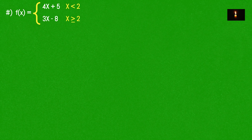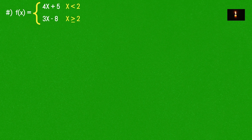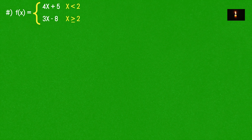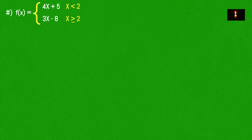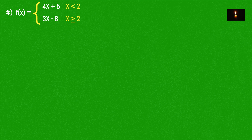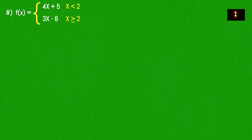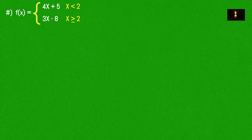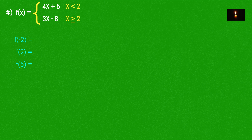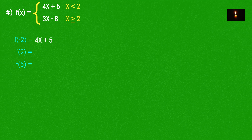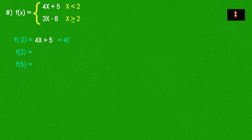This is a piecewise function — a pre-calculus limit check. The function is: f(x) = 4x + 5 and f(x) = 3x - 8. If we evaluate f(-2), we use the first function, so f(-2) = 4(-2) + 5.